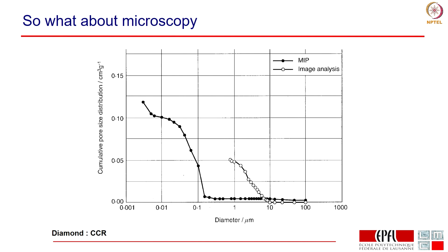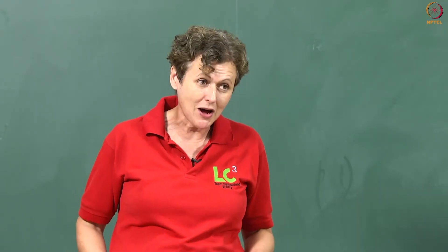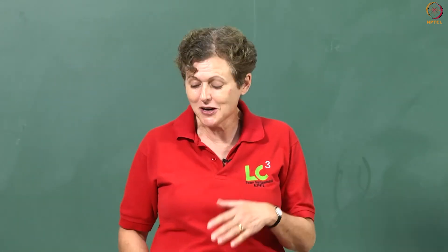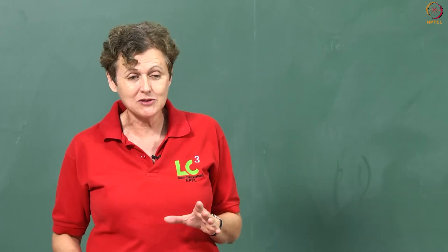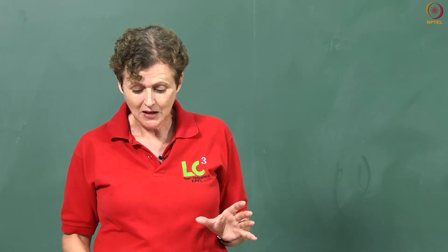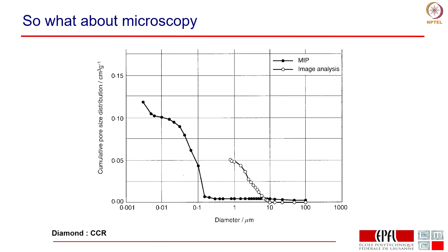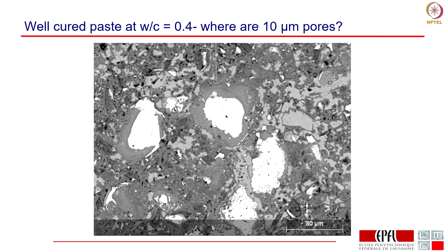Finally, looking at what we get from microscopy: the classical paper by Diamond said MIP is rubbish because it does not measure the same thing as SEM. I would say SEM is rubbish because it does not measure the same thing as MIP — it is not really telling us anything about the pores that are important for determining properties, particularly durability. In that image analysis technique, Diamond supposedly had all pores in the range of 1 to 10 microns — but if you look at a well-cured paste at 30 micron scale, you cannot see one single 10-micron pore.